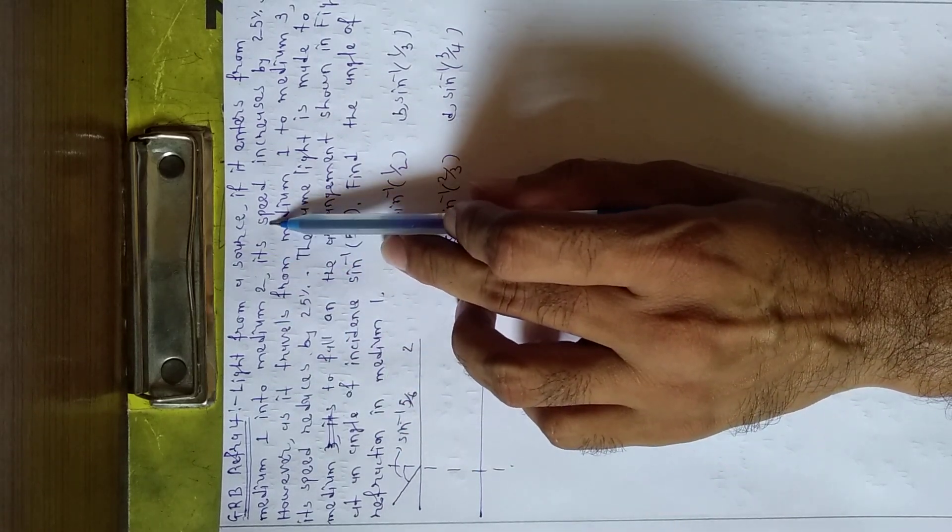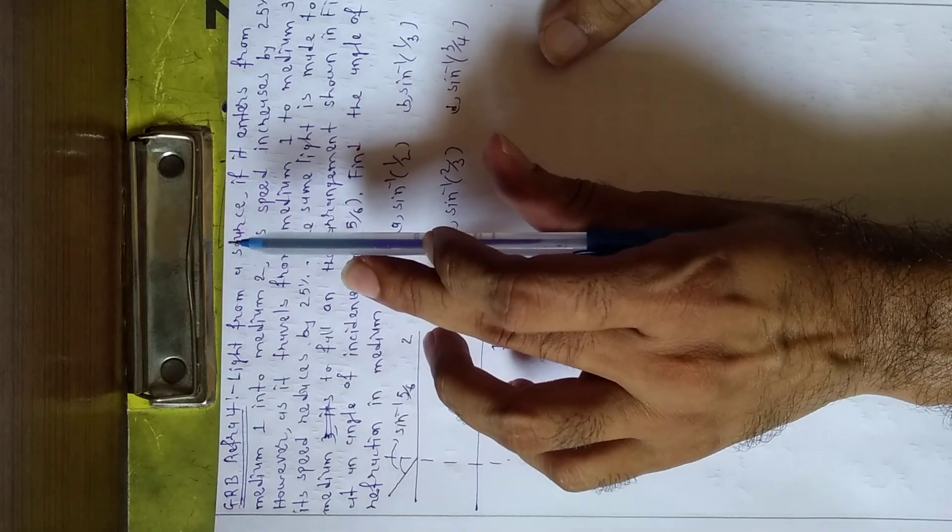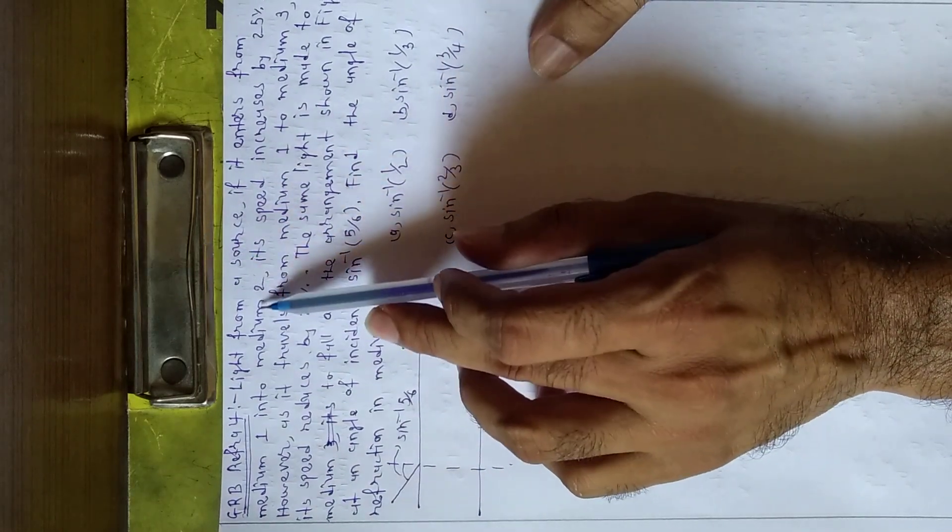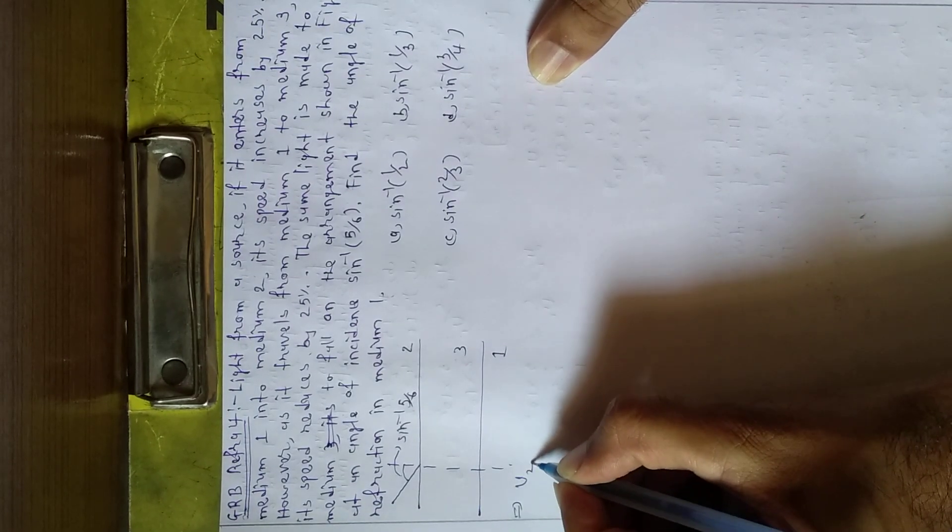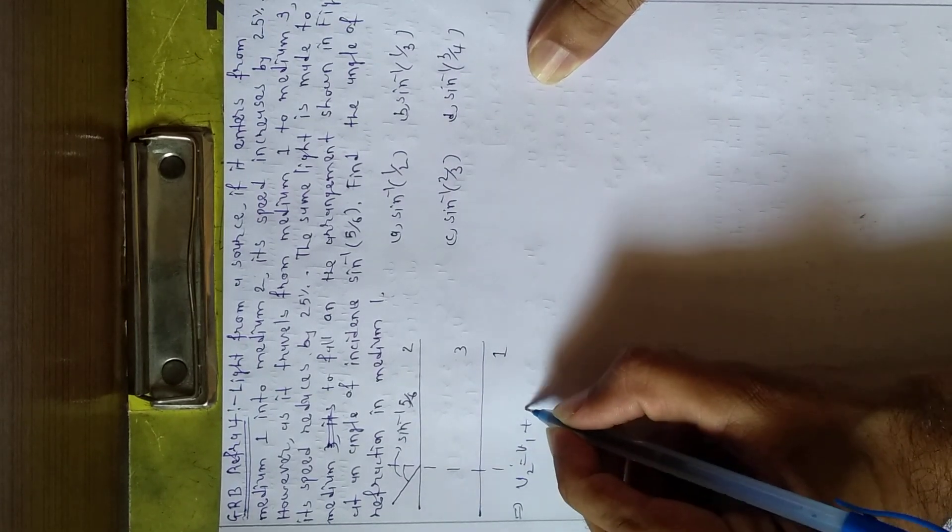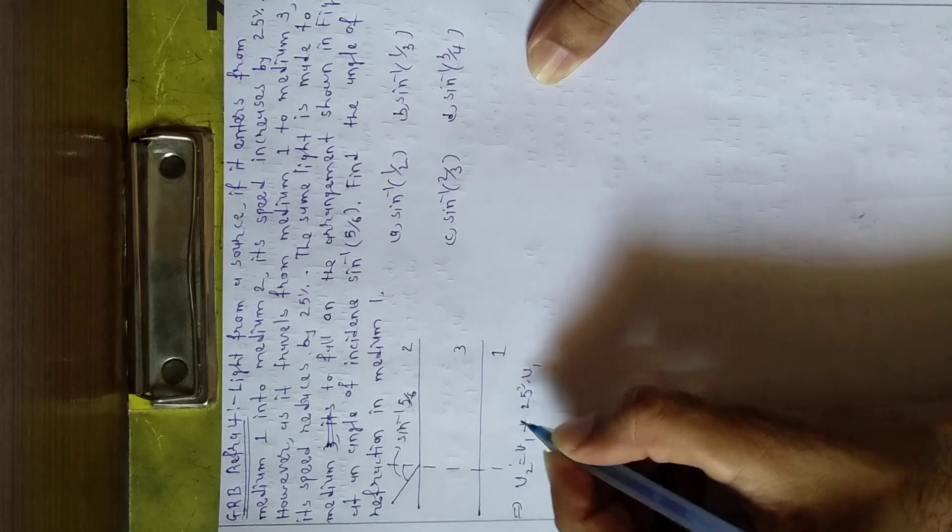its speed increases by 25%. So v2 equals v1 plus 25% of v1.